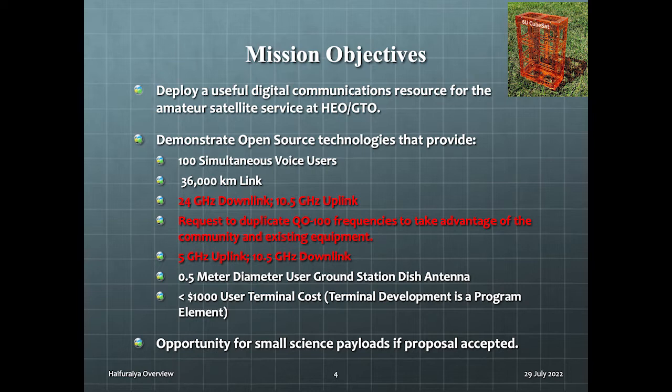The original proposal had 10 gigahertz and 24 gigahertz as the amateur communication frequencies. During the work sessions, it was requested that we consider QO100 frequency plan in order to allow reuse of ground equipment. And we have an existing open-source transponder design that uses 5 gigahertz and 10 gigahertz. So we are talking about prototyping a system here that uses as many of these frequencies as possible. Thank you to the several microwave societies that have already provided feedback.